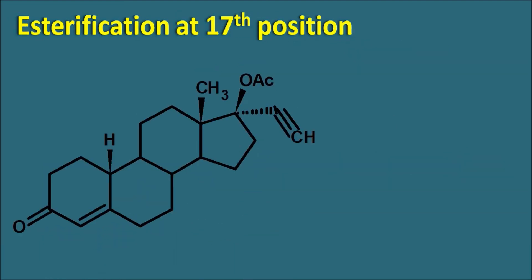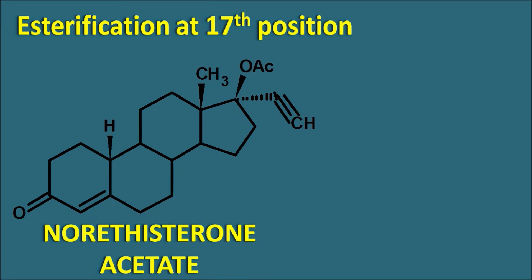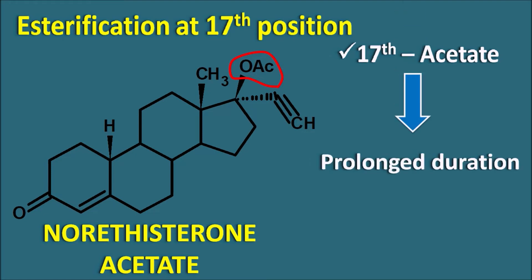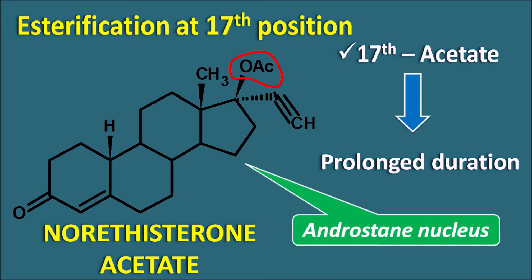Esterification at the 17th position gives norethisterone acetate — the same structure as norethisterone but with an extra acetyl group at the 17th position. The acetyl group at the 17th position results in a prolonged duration of action, so norethisterone acetate has a longer duration of action compared with norethisterone. This compound also has the androstane nucleus. So the key structural modifications to the androstane nucleus are: 17-alpha-ethinyl substitution, removal of the methyl group at the 19th position, and acetylation at the 17th position — all of which produce testosterone derivatives with progesterone activity.